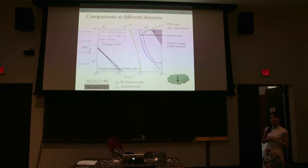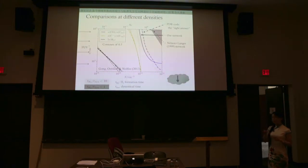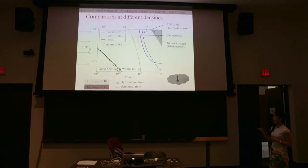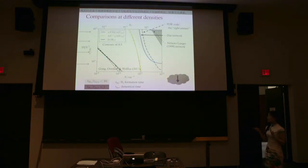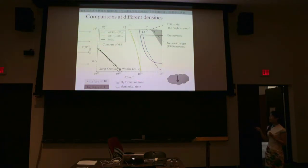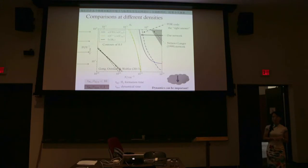We also compared the timescales for H2 formation and the dynamical time. If we assume chemical reactions are in equilibrium, all gas above a certain threshold would be molecular hydrogen. However, because molecular hydrogen forms on a very long timescale compared to the cloud formation timescale, we would not expect much molecular hydrogen in many regions where the H2 formation timescale is simply too long. This suggests that dynamics are very important when considering chemical composition, especially for H2.